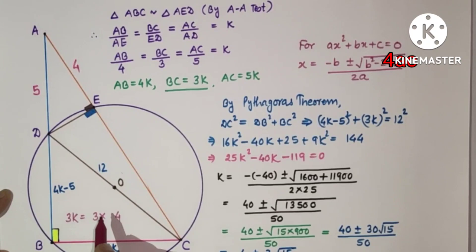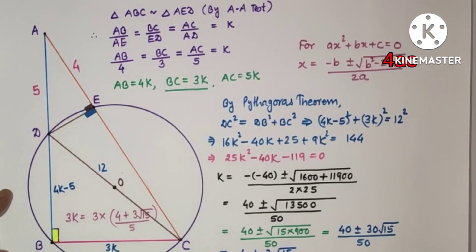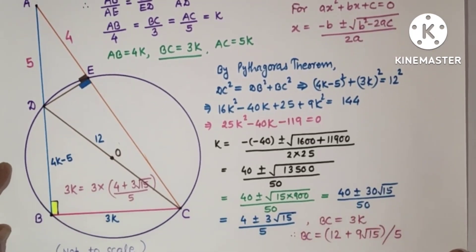So the only considerable answer is 4 plus 3 root 15 by 5. So 3K equals 3 into 4 plus 3 root 15 by 5. Multiplying this, 3 into 4 is 12 plus 9 root 15, total divided by 5, and this is the answer.